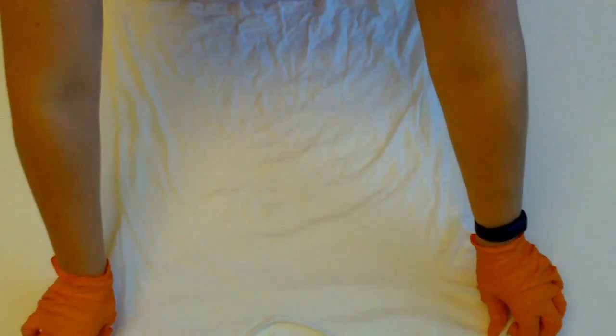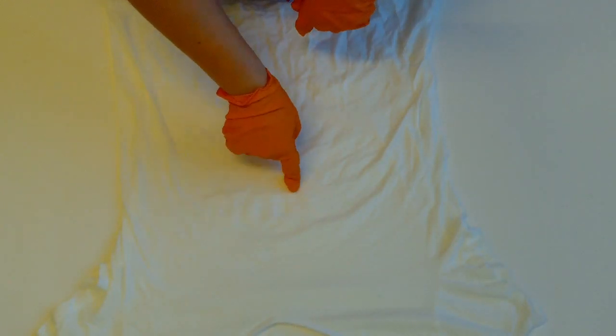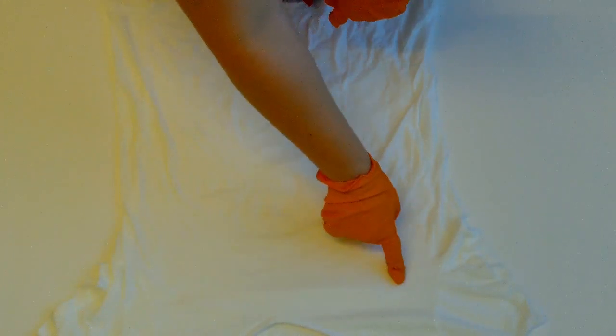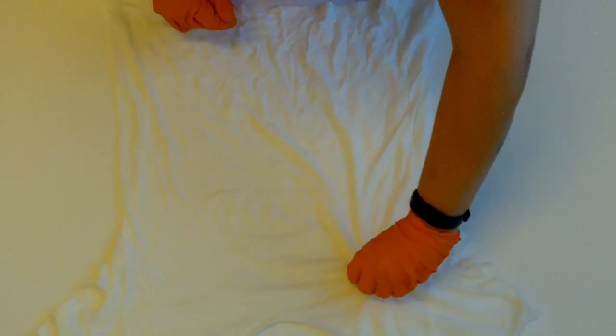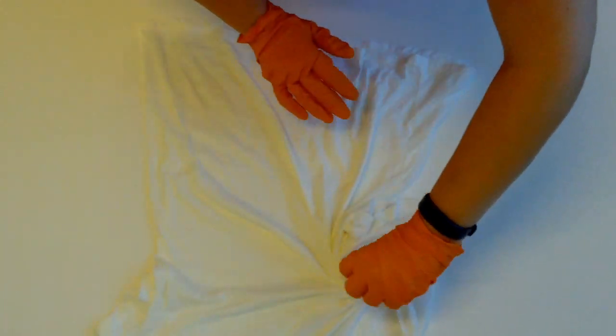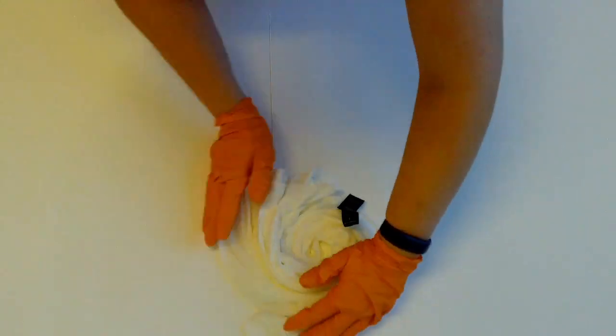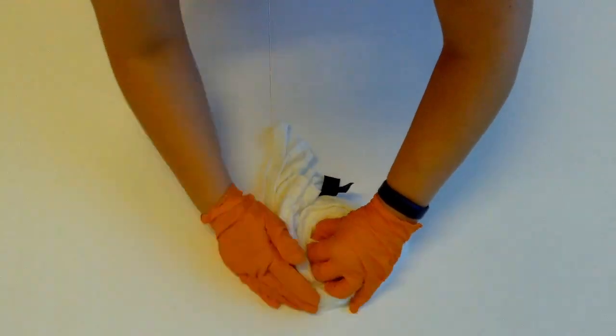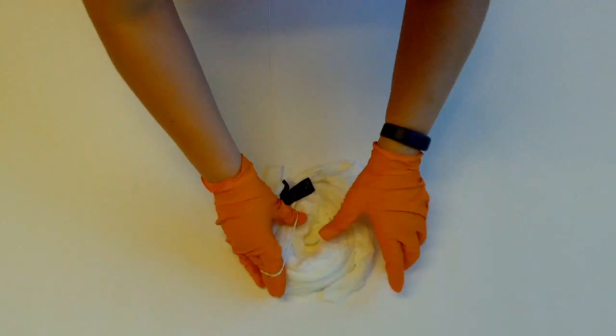For the spiral, lay the shirt out on a flat surface. Decide the center point of the spiral, in the center or off to a side. Pinch and begin to twist until the entire shirt is in a tight twist. Then secure with rubber bands.